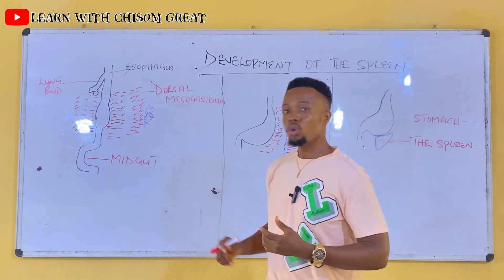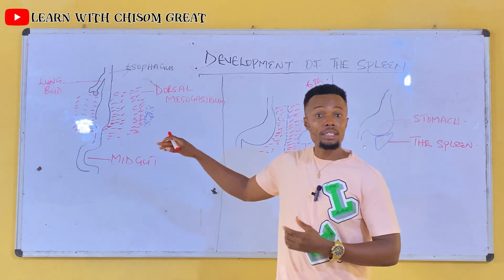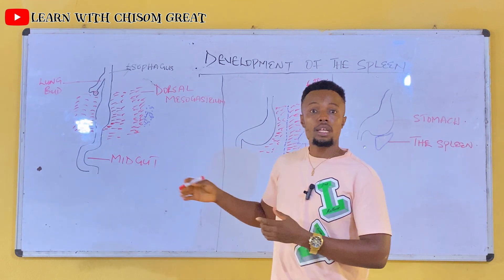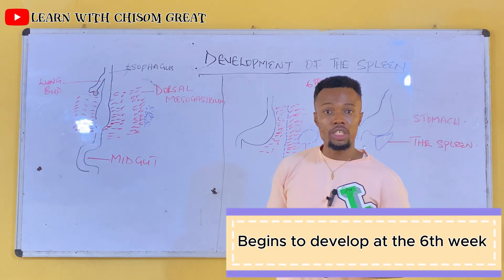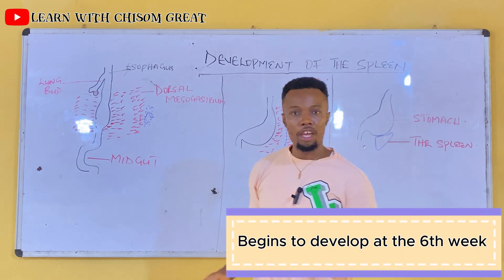The development of the spleen starts at the sixth week of fetal life.